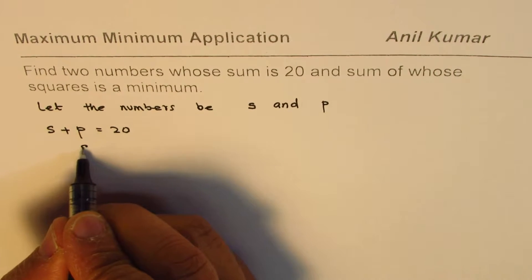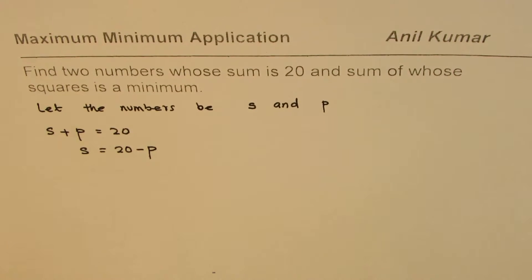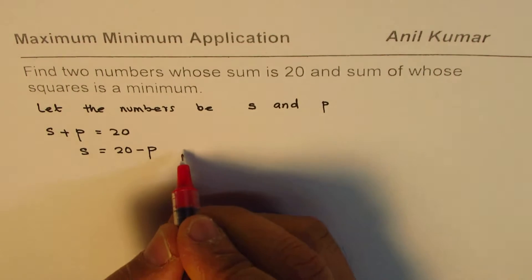From here we can write one variable in terms of another. So let me write s equals 20 minus p, and I'll call this my equation number one.